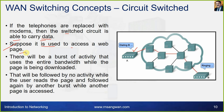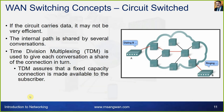When using a circuit for data, there will be a burst of activity using the entire bandwidth while a page is being downloaded, followed by no activity while the user reads the page, then another burst when another page is accessed. The internal path is shared by several conversations using time division multiplexing (TDM), which gives each conversation a share of the connection in turn and assures a fixed capacity connection to the subscriber.